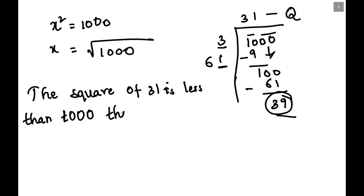Then the next number will be 32 squared which is 1024.